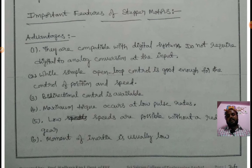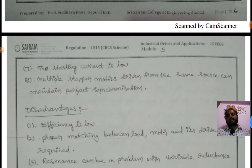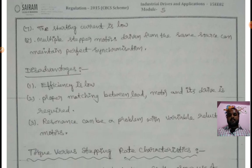Simple open loop control is good enough for control of position and speed. Bidirectional control is available. Maximum torque occurs at low pulse rates. Low speeds are possible without any reduction gear. Moment of inertia is usually low. The starting current is low. Multiple stepper motors driven from the same source can maintain perfect synchronization.